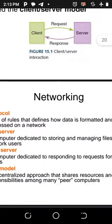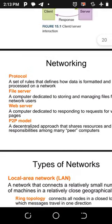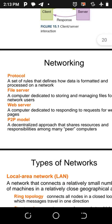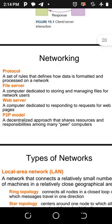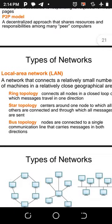Some component features involved in networking: first, a protocol is a set of rules that defines how data is formatted and processed on a network. A file server is a computer dedicated to storing and managing files for network users. A website server is a computer dedicated to responding to requests for web pages. The P2P model is a decentralized approach that shares resources and responsibilities among many peers.